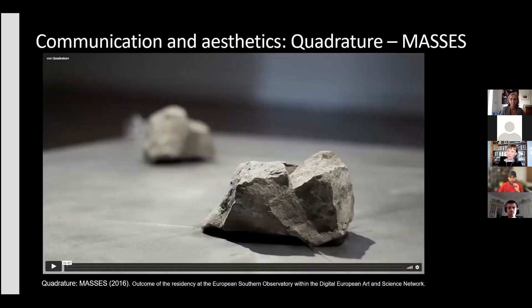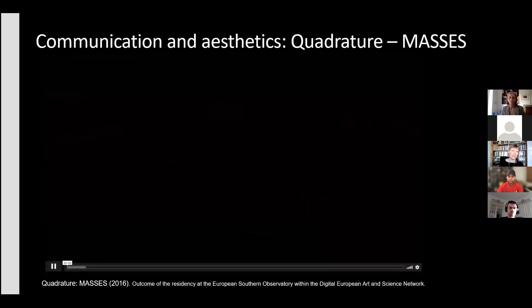This is also true for communication — communicating very complex principles. Although the project by Quadratore, developed after a residency at the European Southern Observatory, does not exactly show how binary stars find their equilibrium, it very much shows and gives the feeling of what happens and how fragile this balance is. Sometimes in science communication, aesthetics and the experience of watching something can be much more effective than explaining the whole theory.